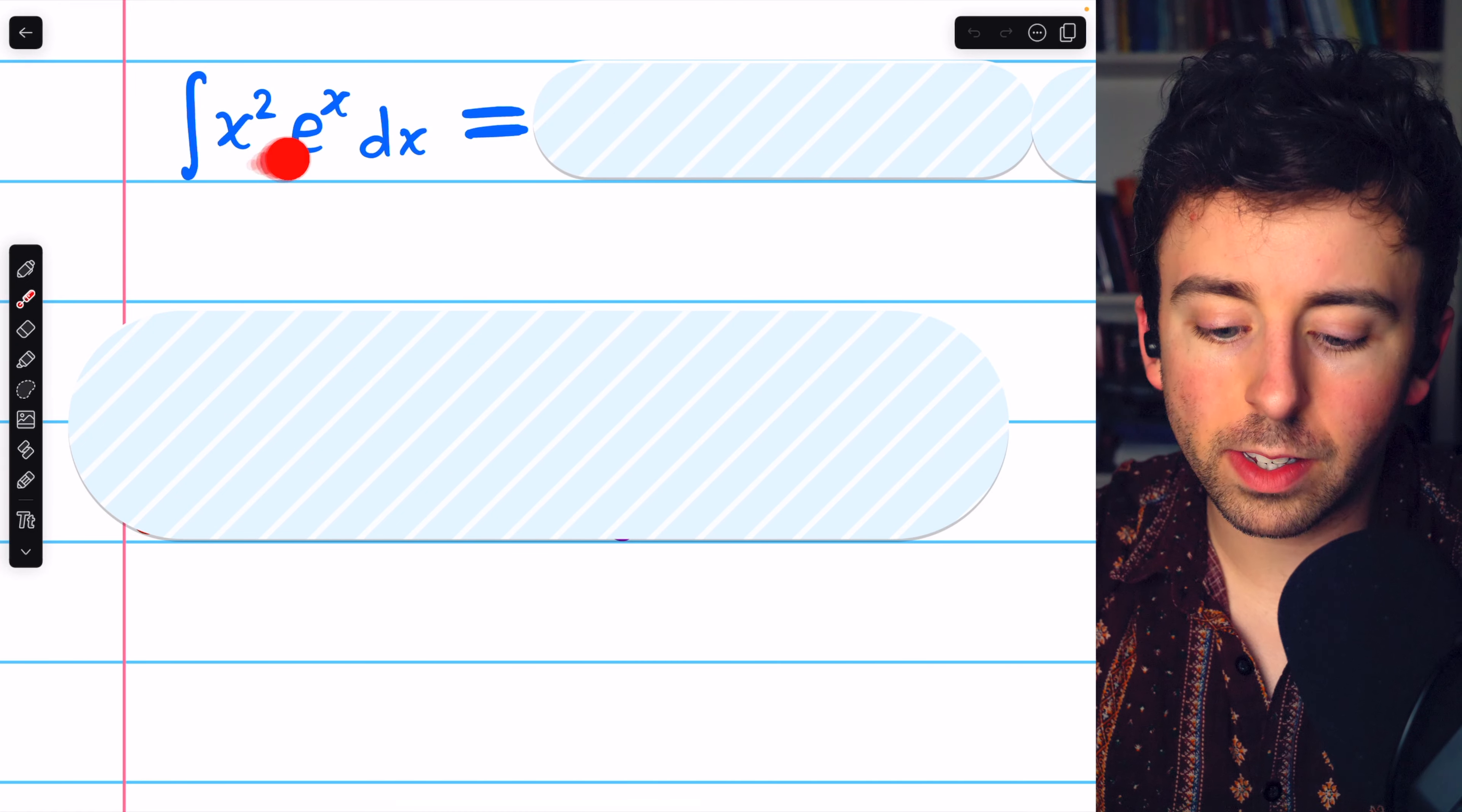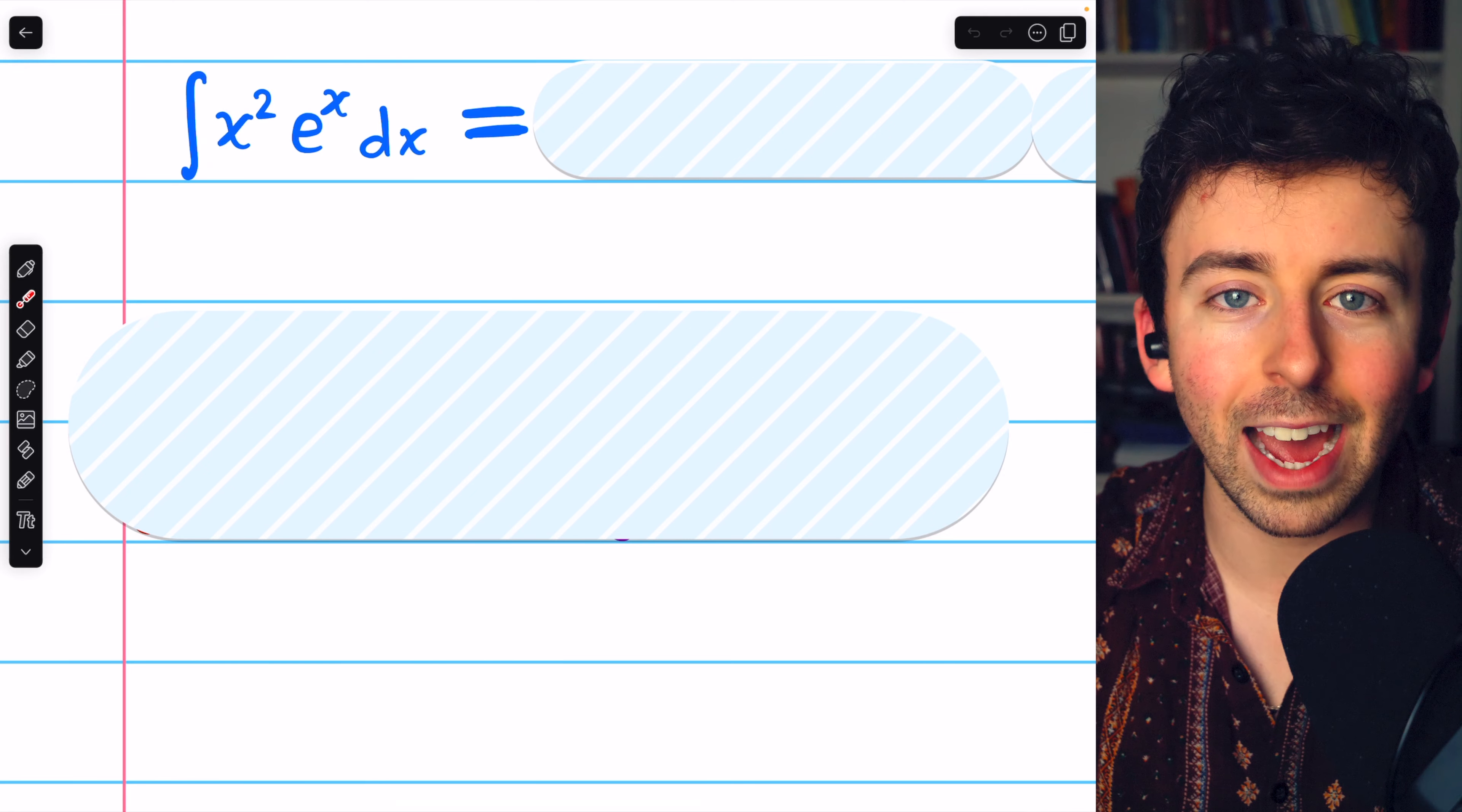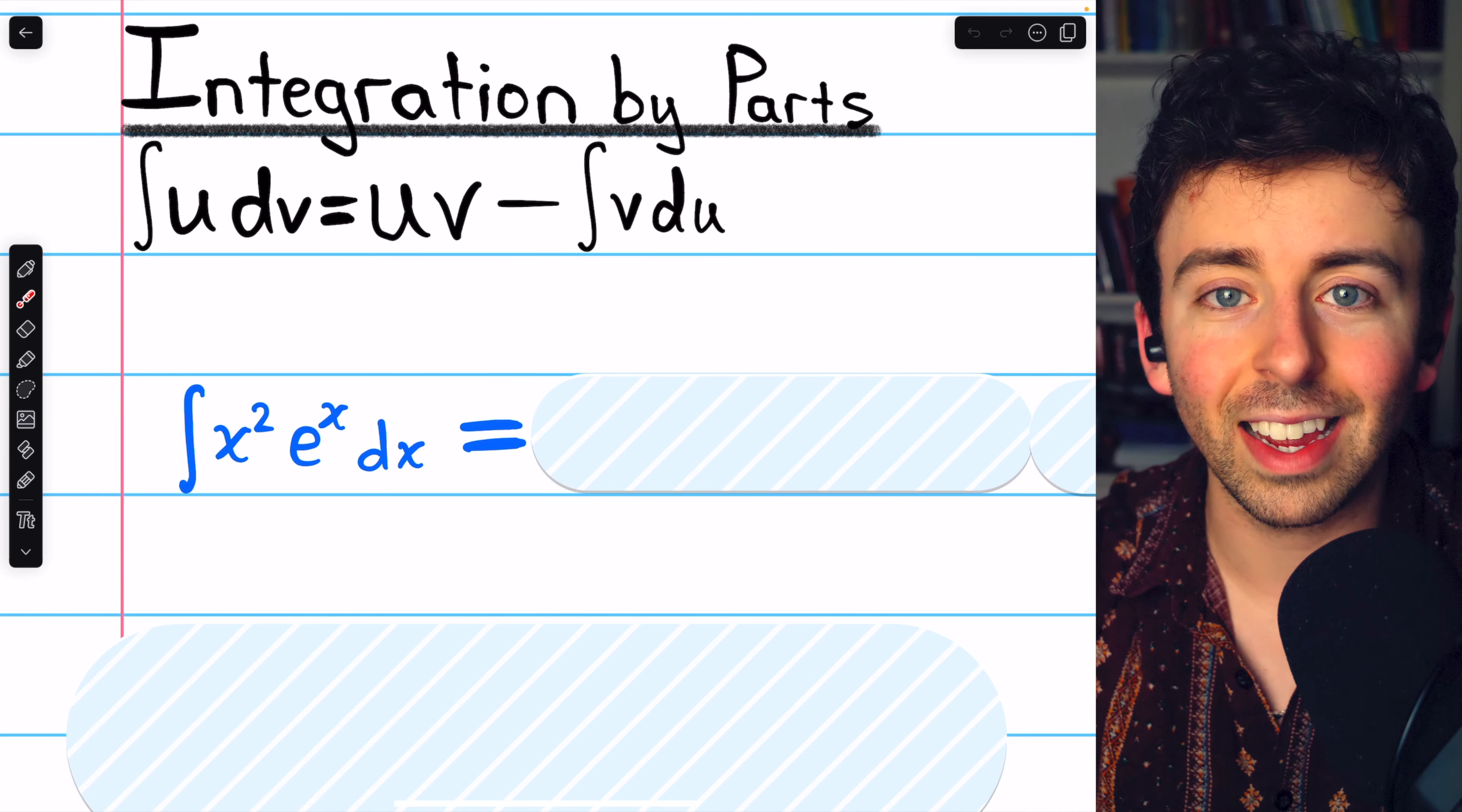How do we integrate x squared times e to the x? Well, this is the product of an algebraic function, x squared, and a transcendental function, e to the x. That's a common situation where we use integration by parts, and indeed, this is exactly what we're going to use for this integral.